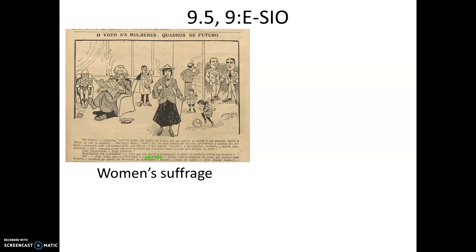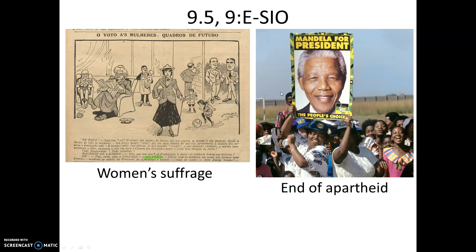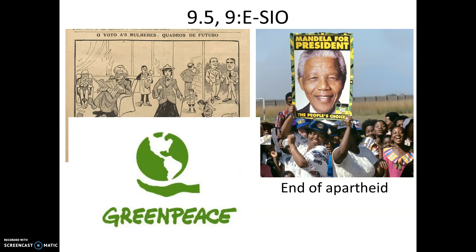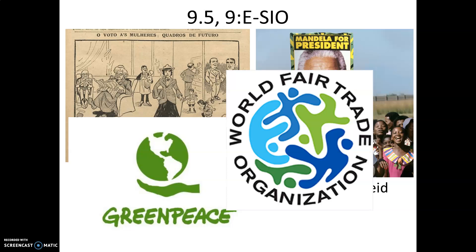Women were granted the right to vote in a host of countries in the 20th century, including Brazil, which the cartoon implies gave this right in 1932. The end of segregationist apartheid policies in South Africa occurred in the early 1990s, resulting in the legalization of the African National Congress and the election of Mandela as president. Greenpeace is an NGO and environmental movement headquartered in Amsterdam, with the goal of ensuring the earth's ability to nurture life in all its diversity. The World Fair Trade Organization protests the inequality of economic consequences from global integration, with members from 76 countries striving for fair representation of disadvantaged producers worldwide.